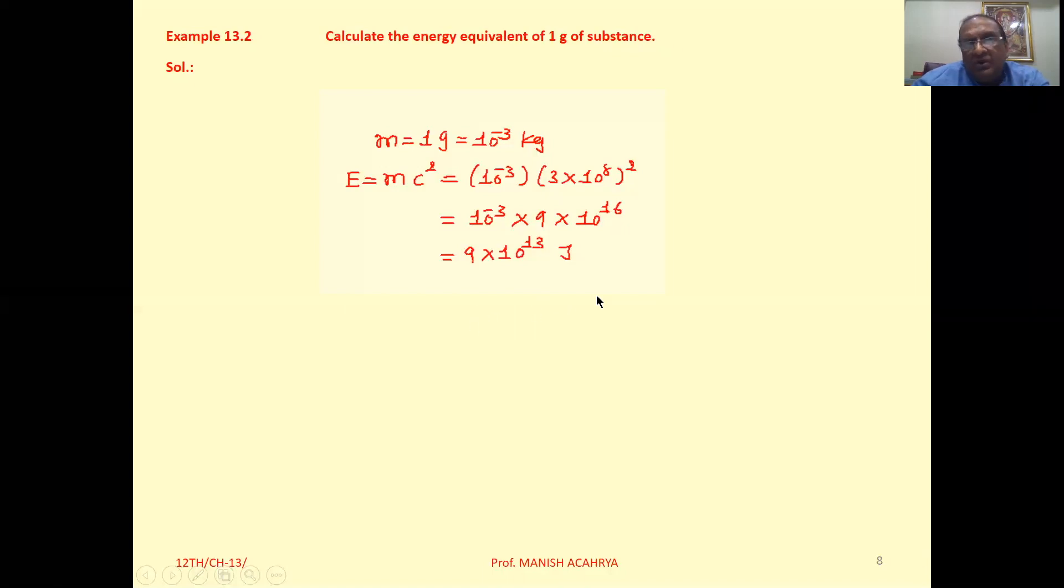If you want to give answer in terms of electron volt, then divide this one by 1.6 into 10 raised to minus 19. You will get answer in electron volt, or you can represent that one in terms of MeV also.